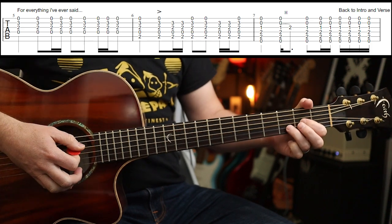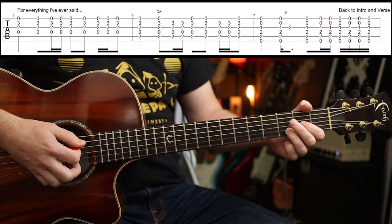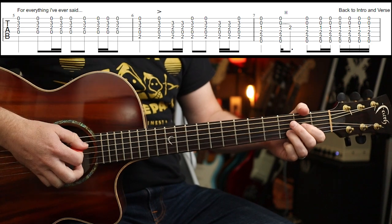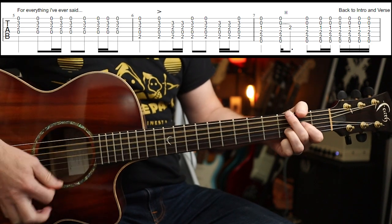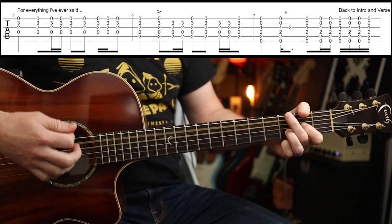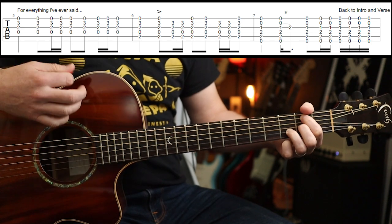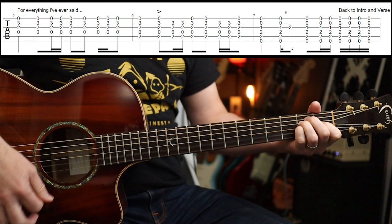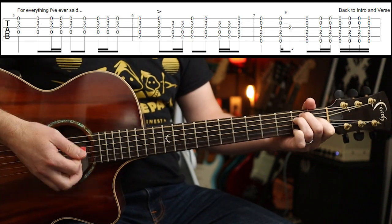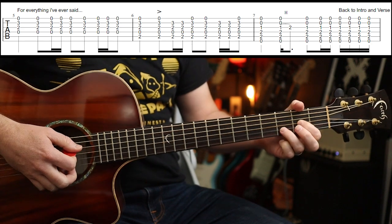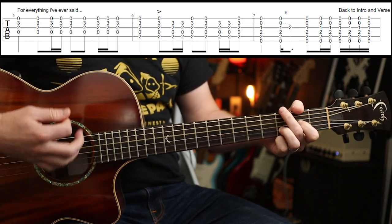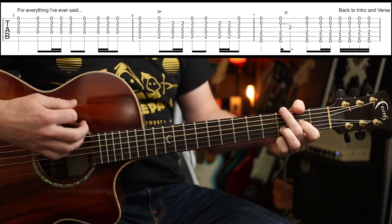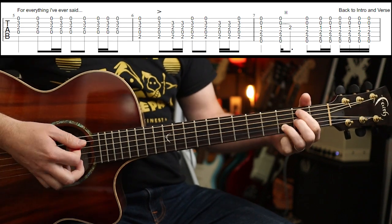Then, there's a D5 part that comes in for the 'for everything I've said' part, sort of the second half of the verse, I think it is. And you play. And then, you go back into that intro and verse part. D5 for one bar.